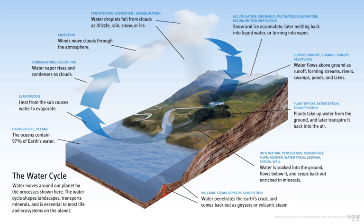Snowmelt: the runoff produced by melting snow. Runoff: the variety of ways by which water moves across the land. This includes both surface runoff and channel runoff. As it flows, the water may seep into the ground, evaporate into the air, become stored in lakes or reservoirs, or be extracted for agricultural or other human uses.